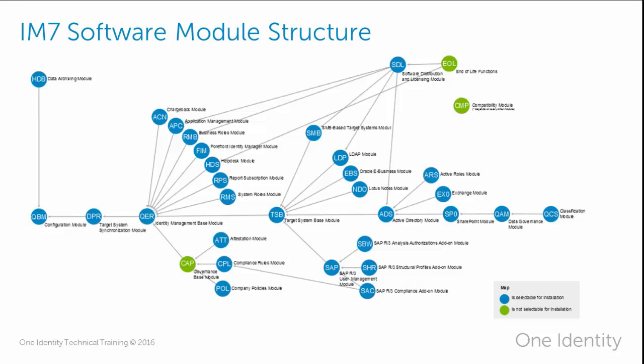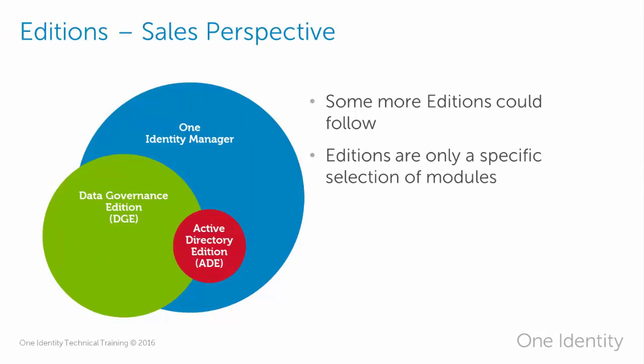Additions have no impact on this modular structure, because additions are simply a selection of specific modules. Sales can bundle these modules and create whatever named addition they choose. Currently, we ship Identity Manager 7 with three additions: the Identity Manager installation, the Data Governance Edition, and the Active Directory Edition. For the future, we plan many more additions — for example, there could be a TPAM edition or something similar.